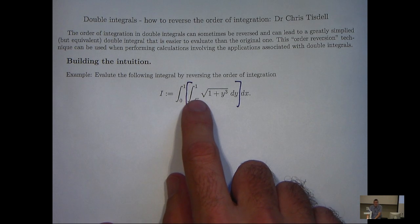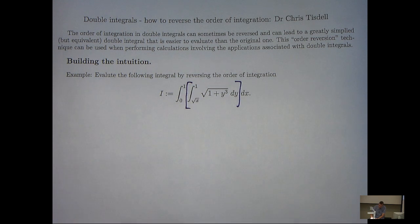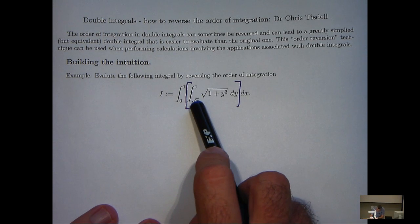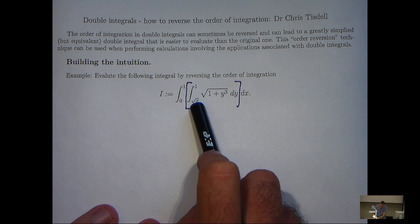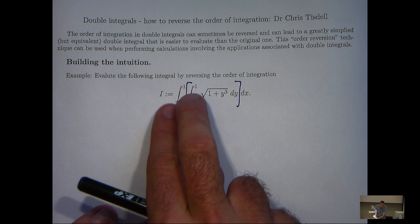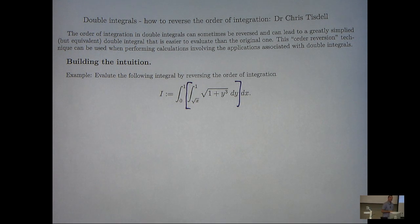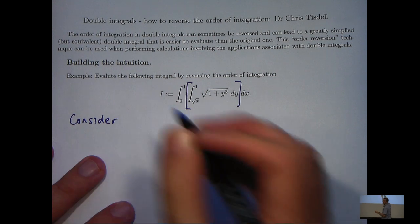Well, it comes down to analyzing these upper and lower limits, forming the region of integration, and then redescribing it suitably. Now, firstly, notice this lower limit of integration is non-constant. We've got a root x there. If we did have a constant here, then we could just switch the integral signs, switch the differentials, by applying Fubini's simple theorem for rectangles. However, we can't do that in this case. So, what we're going to do is analyze our region of integration.